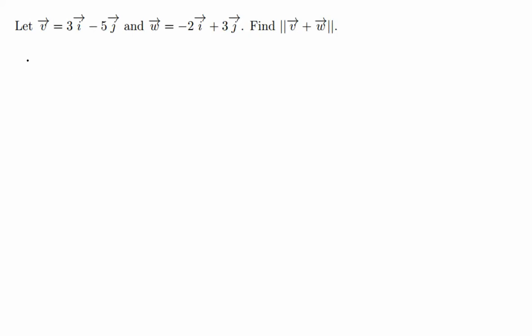Solution: vector v plus vector w is 3i minus 5j plus... Since we have plus, we don't have to put parentheses around it, because when we distribute plus 1 it's not going to change anything.